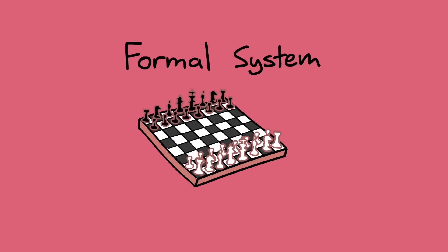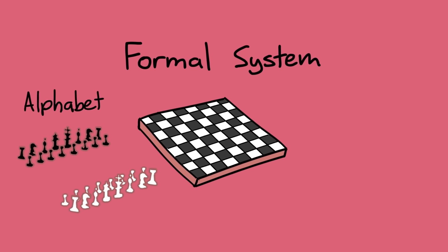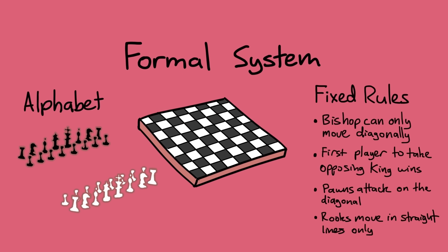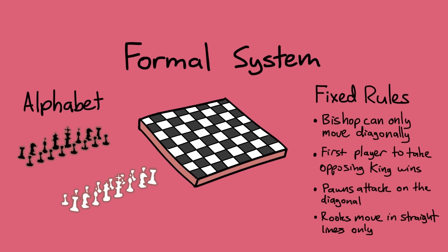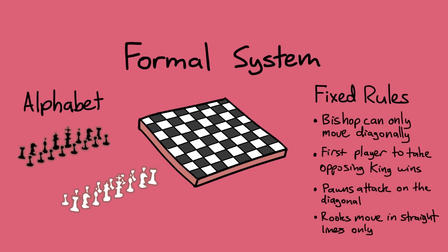Chess is a formal system. The alphabet are the pieces which are manipulated according to a fixed set of rules. It's important to note that the pieces and the rules don't have any meaning outside of the game.